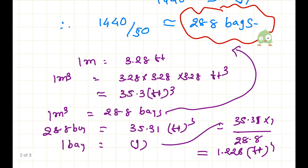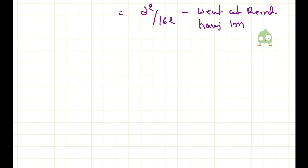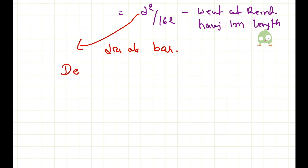Approximately you can take 1.23 cubic feet. The equation d squared by 162 is used to determine the weight of reinforcement having 1 meter length, where d is the diameter of the bar. To derive this equation, we use the density of steel, which is 7850 kg per meter cube.